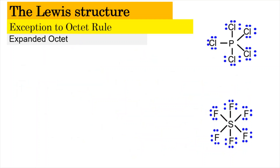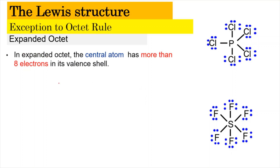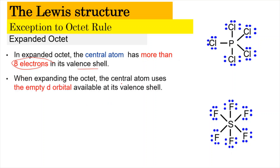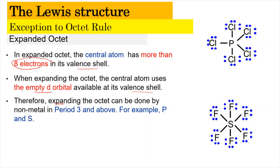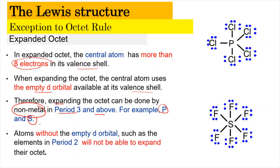Now we're going to look into the expanded octet. For the expanded octet, the central atom will have more than 8 electrons in its valence shell. Even with 8 or more than 8 electrons, these molecules are essentially stable because the formal charge equals 0. When expanding the octet, the central atom uses the empty d orbital available at its valence shell. For this reason, the expanded octet can only occur for non-metals in period 3 and above. Atoms without empty d orbitals, such as elements in period 2, will not be able to expand their octet.